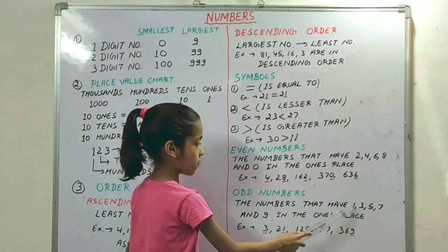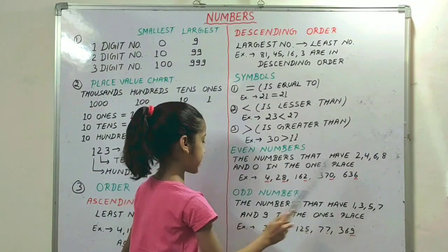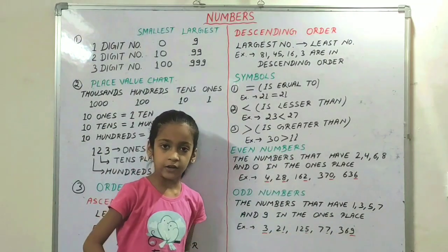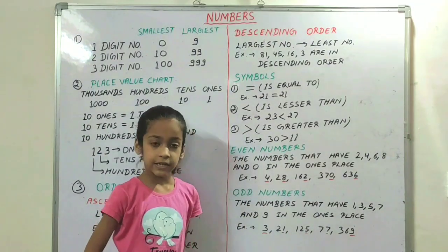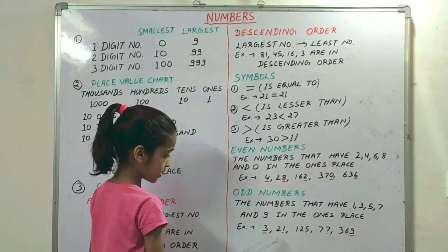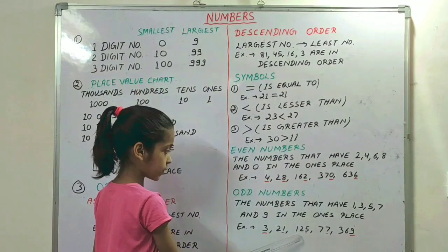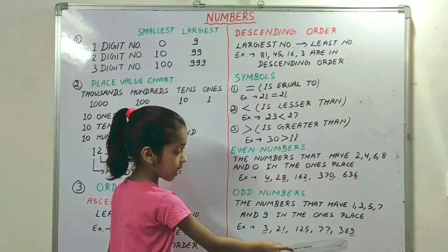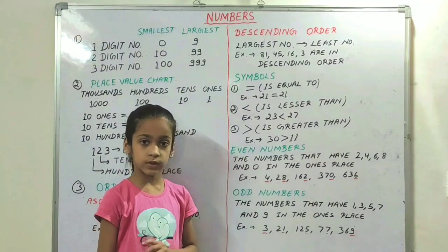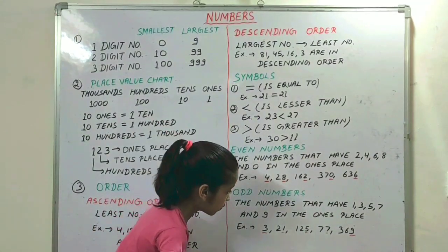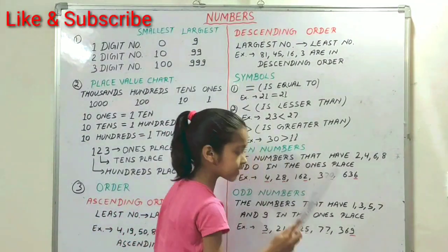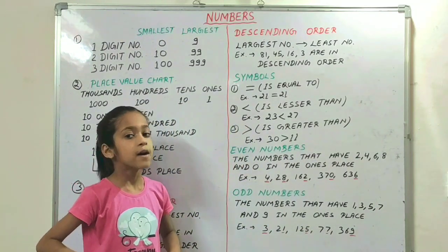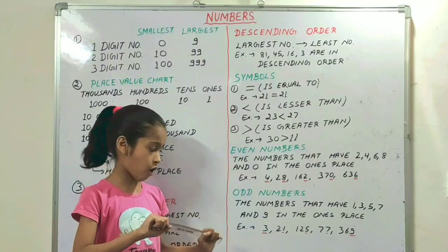The next basic is odd numbers. The numbers that have 1, 3, 5, 7, or 9 in the ones place are called odd numbers. Example: 3, 21, 1, 25, 77, and 369. You can see that 3, 1, 7, and 9 are in the ones place, so these are odd numbers. You only have to check the ones place to decide if a number is odd or even.